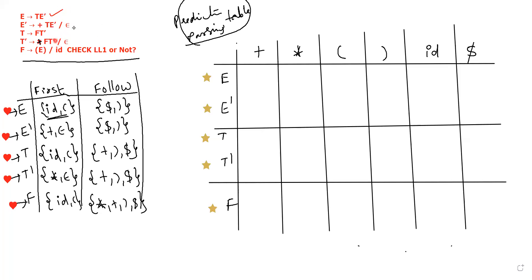What are the operators? Plus, star, open bracket, close bracket — and also the ID identifier. These are the terminals used in the table.